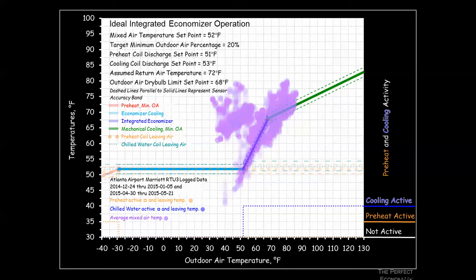Looking at the data, we see clouds of points in the upper left deviating from the ideal profile. This indicates the system is using minimum outside air in cases when it shouldn't be — returning to more energy-intensive return air instead of economizing — and likely keeping the cooling coil running in the 40 to 50 degree outside air range unnecessarily.